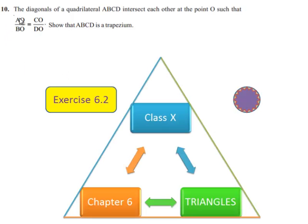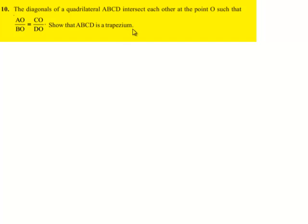Moving on to the 10th problem: the diagonals of a quadrilateral ABCD intersect each other at O such that AO by BO is equal to CO by DO. Show that ABCD is a trapezium.